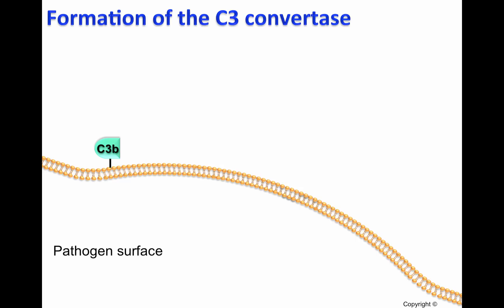As we have shown in previous videos, the classical lectin and alternative pathway can deposit C3b on the cell surface. If this C3b is recognized by factor B, factor B will then be cleaved by factor D, generating the C3 convertase of the alternative pathway, C3b, Bb.